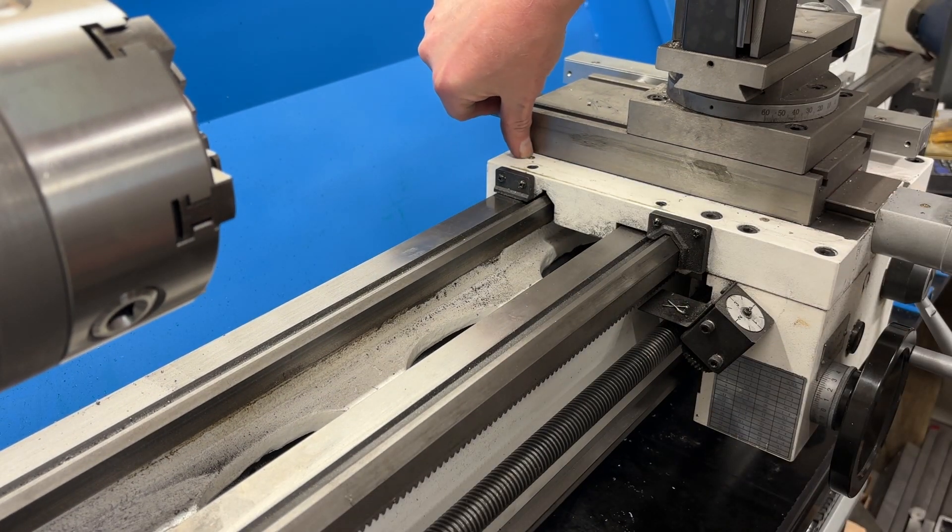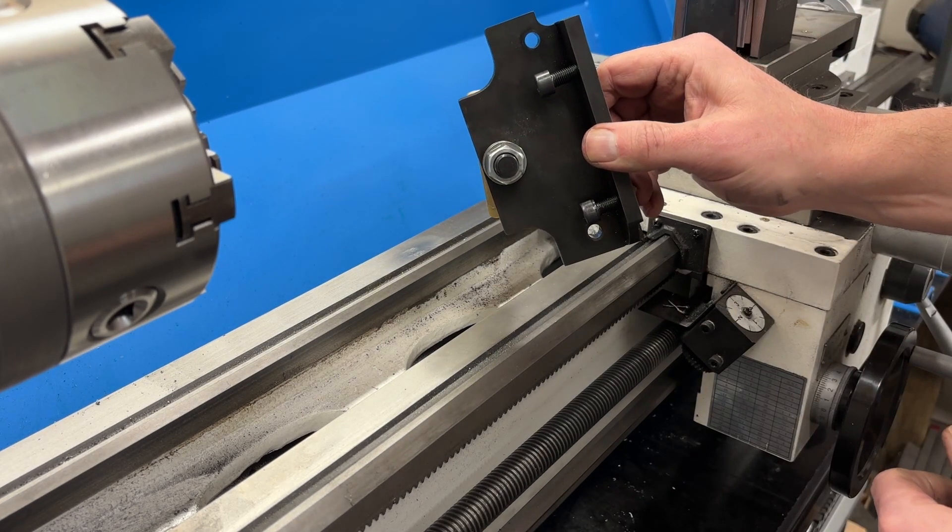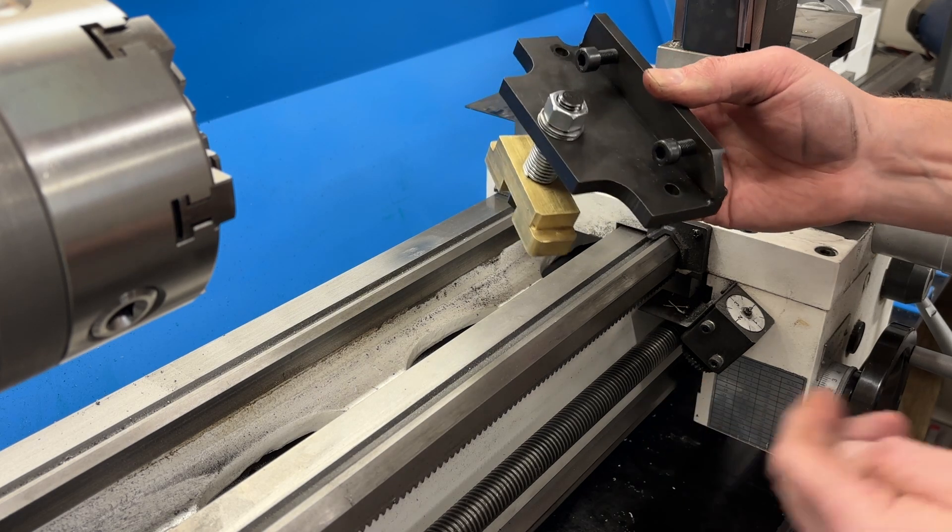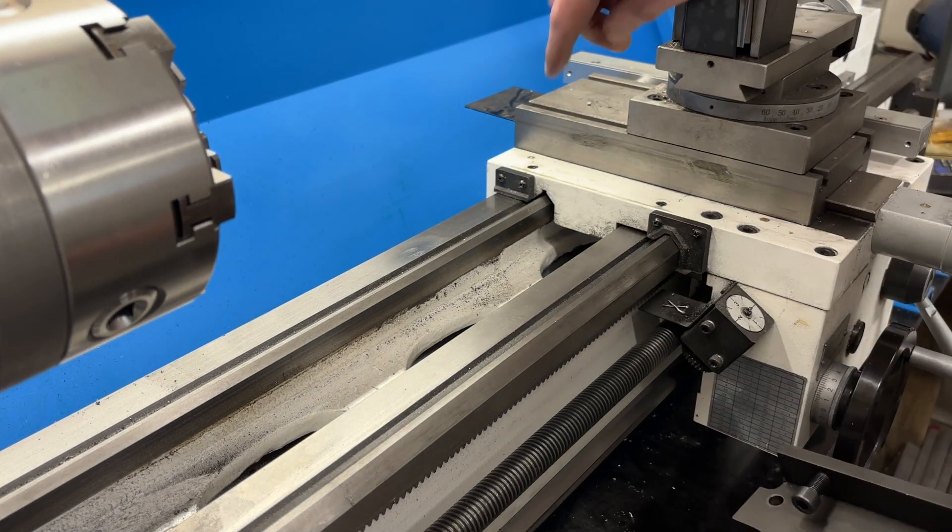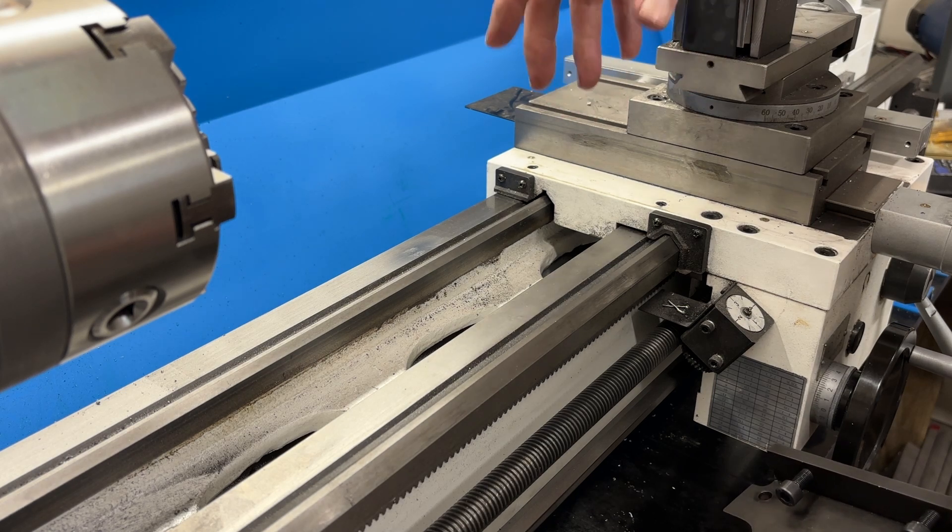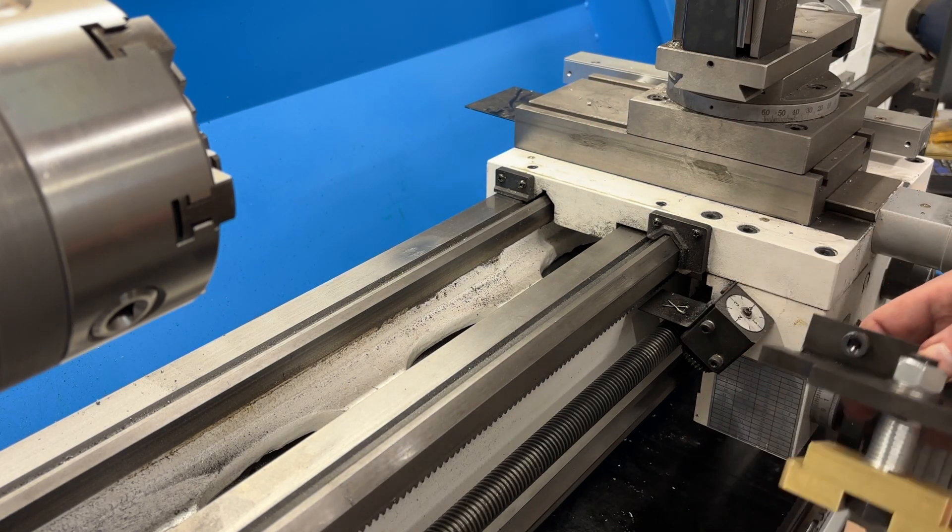Second thing of note, there's a ball oiler right there. I had to notch this bracket to clear the ball oiler. So just something to keep in mind. Basically, I didn't want this locking mechanism to be just like the DRO scale and reduce my access to the features of this machine.